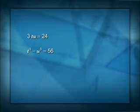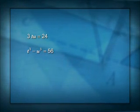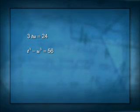I now have those two equations: 3TU is 24 and T cubed minus U cubed is 56, and I've got to solve these simultaneously.